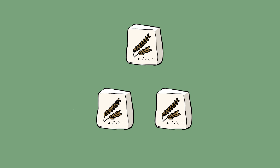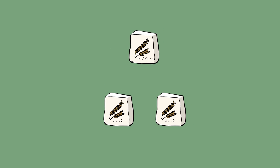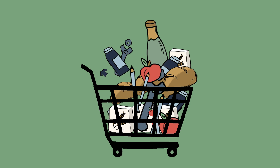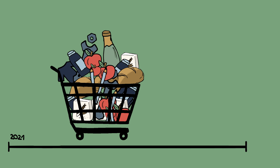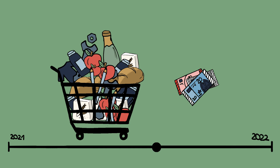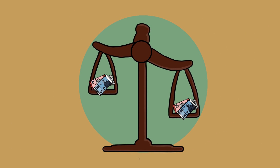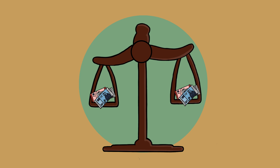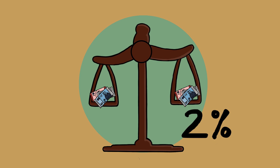Of course, this is not done based on just one good, as in our example, but based on a representative basket of goods containing everyday products and services. The inflation rate is determined by calculating how the price of this basket of goods has changed within a year. In a functioning economy, a slight inflation rate is normal — the ECB aims for around 2% per year.